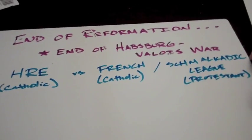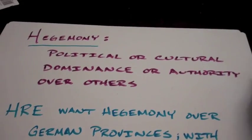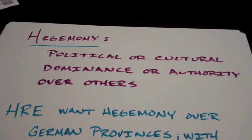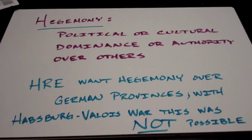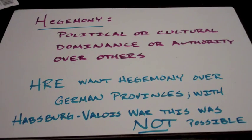With the end of this war, and the French eventually aiding the Schmalkaldic League and forcing a treaty with the Holy Roman Empire, what it ended up with was no hegemony — a big fancy SAT word for no political or cultural dominance — for the Holy Roman Empire over its German provinces. That was a thing of Charles V, but this war does not allow that. That is exactly why the French got involved, marking it a political war, not a religious war.